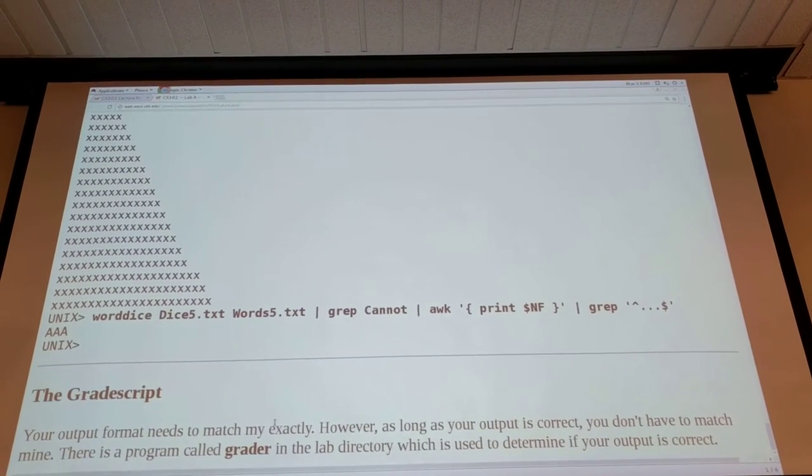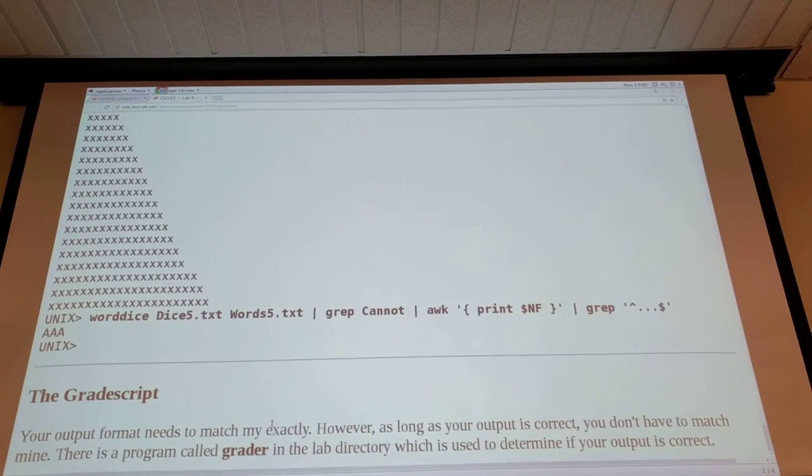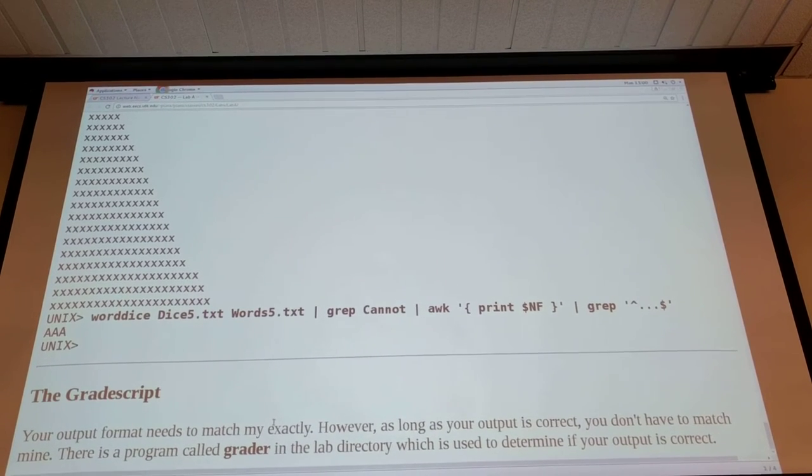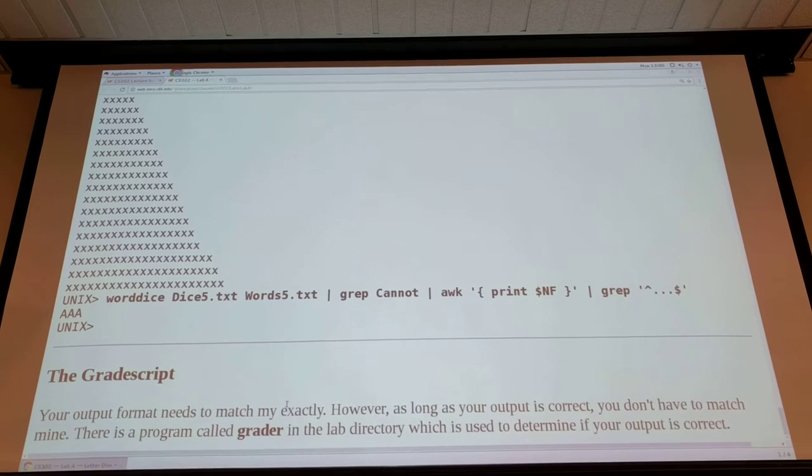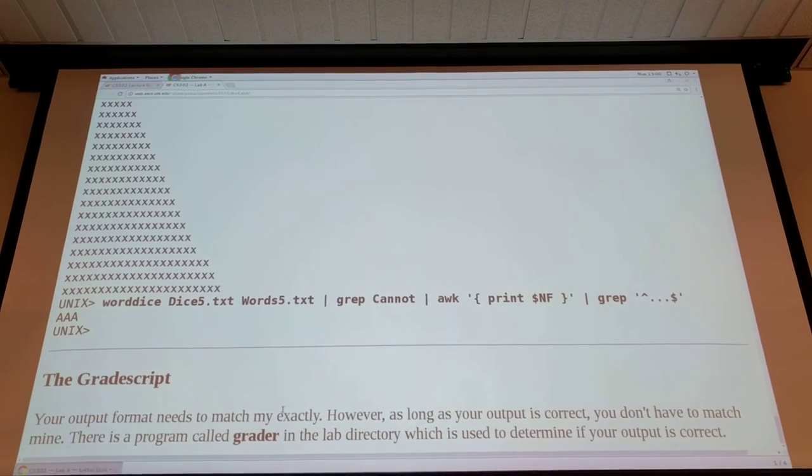So there's a program called Grader in the lab directory that will determine if your output is correct given the die that you say with spelling the word, or given that you can't spell the word.